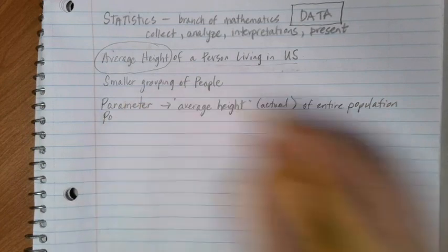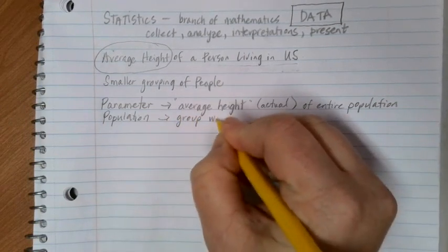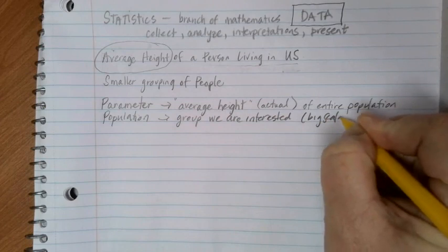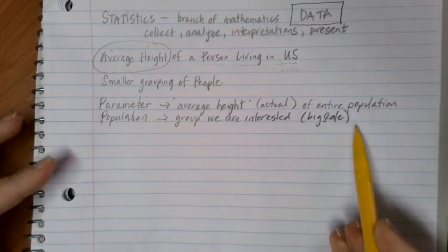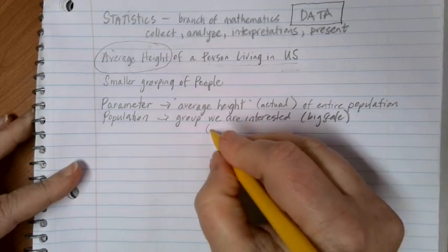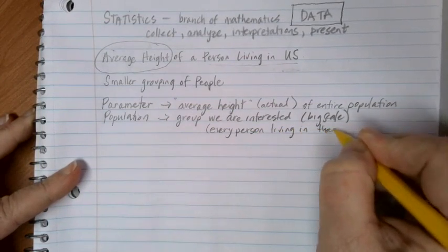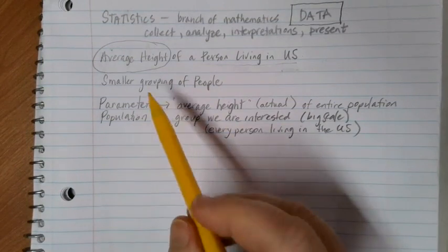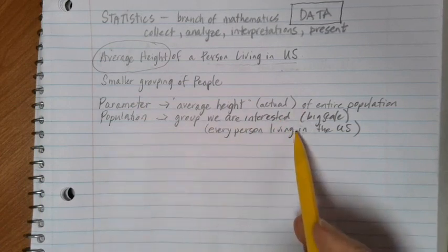That brings up the term population. Population, when we're dealing with statistics, is the group that we are interested in. On a big scale, this is everyone that would be involved in whatever scientific study you are interested in. So in this case, my population would be every person living in the U.S. Conveniently, parameter and population both start with P — it's an easy way to remember it. Parameters are key pieces of information gathered from everybody in an entire population.